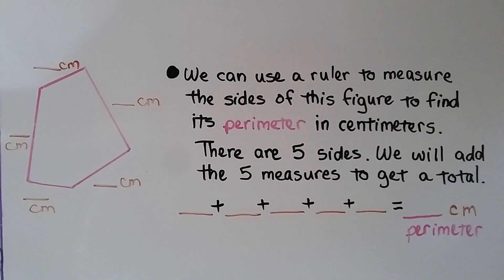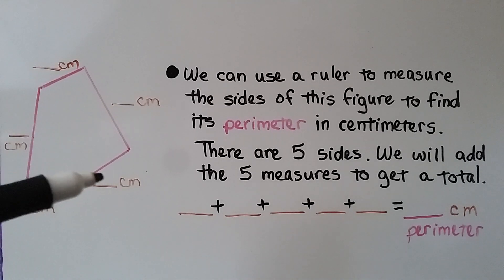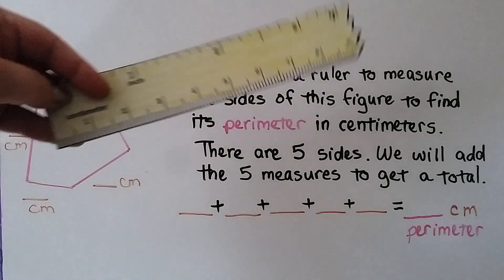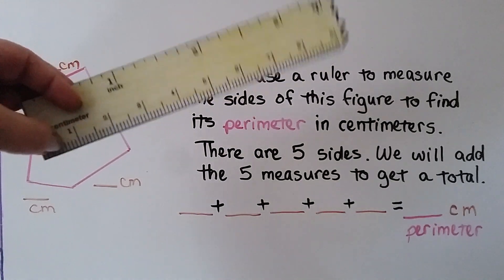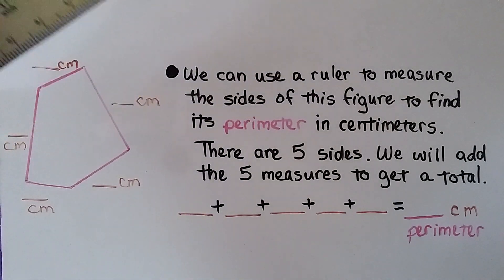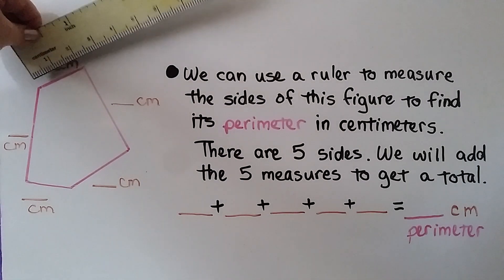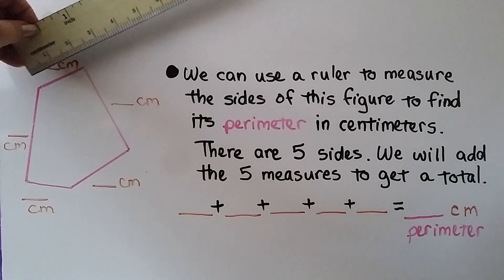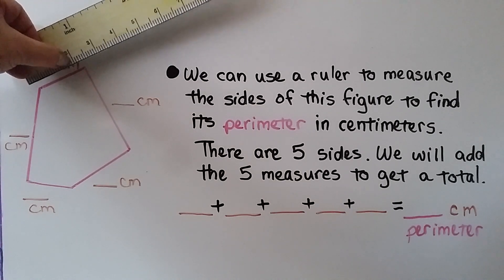We can use a ruler to measure the sides of this figure to find its perimeter in centimeters. There are 5 sides: 1, 2, 3, 4, 5. We'll need to add the 5 measures to get a total. We're going to measure in centimeters — that's the part of the ruler that says centimeters. We can hold it up and see that this side is 2 centimeters — it goes to the 2 right here.